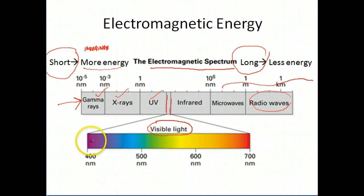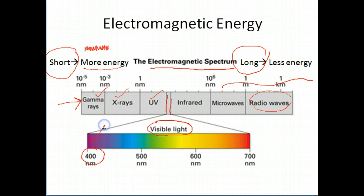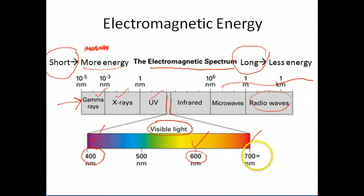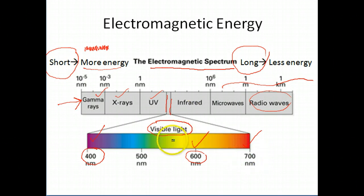If you're seeing wavelengths of 400 nanometers, which is obviously very small, your eyes are going to interpret that as purple. Conversely, if you're seeing wavelengths of 600 nanometers, your eyes will see that as yellow, and over at 700 nanometers, your eyes will see that as red. This is actually really important for photosynthesis because certain wavelengths of light are absorbed better by plants than others.